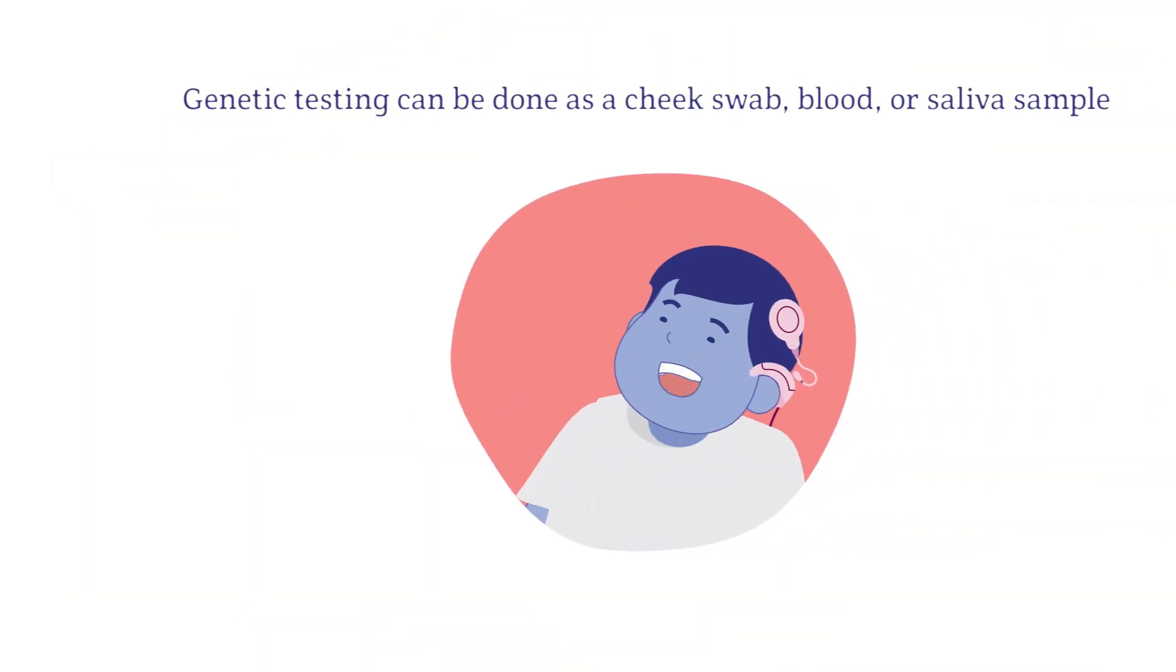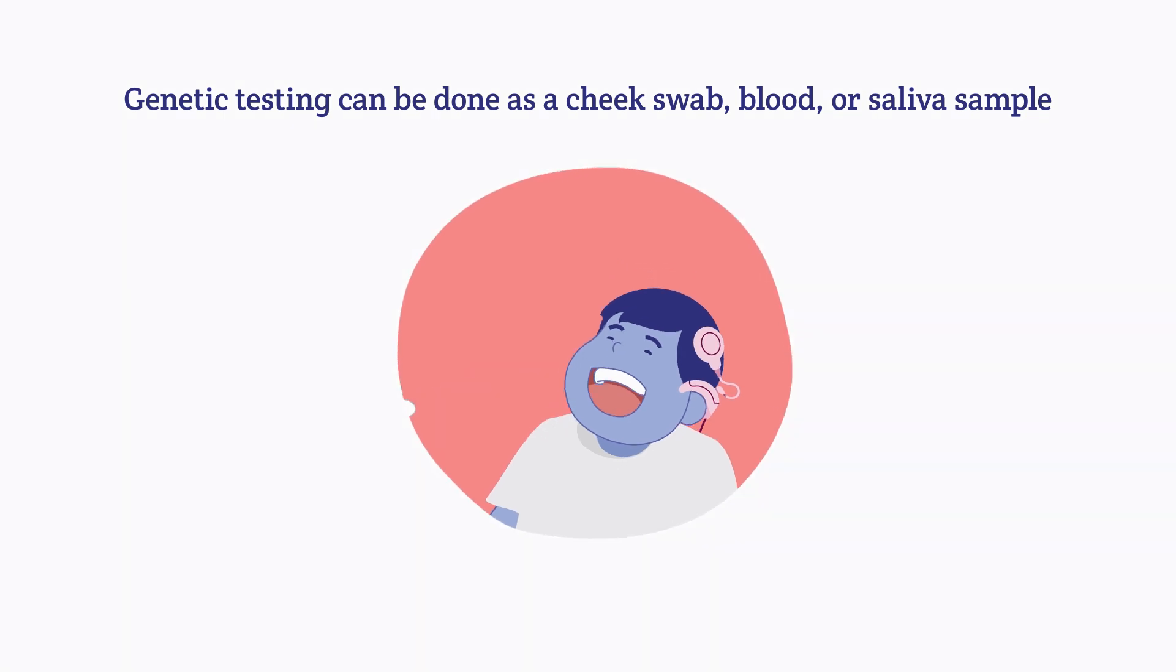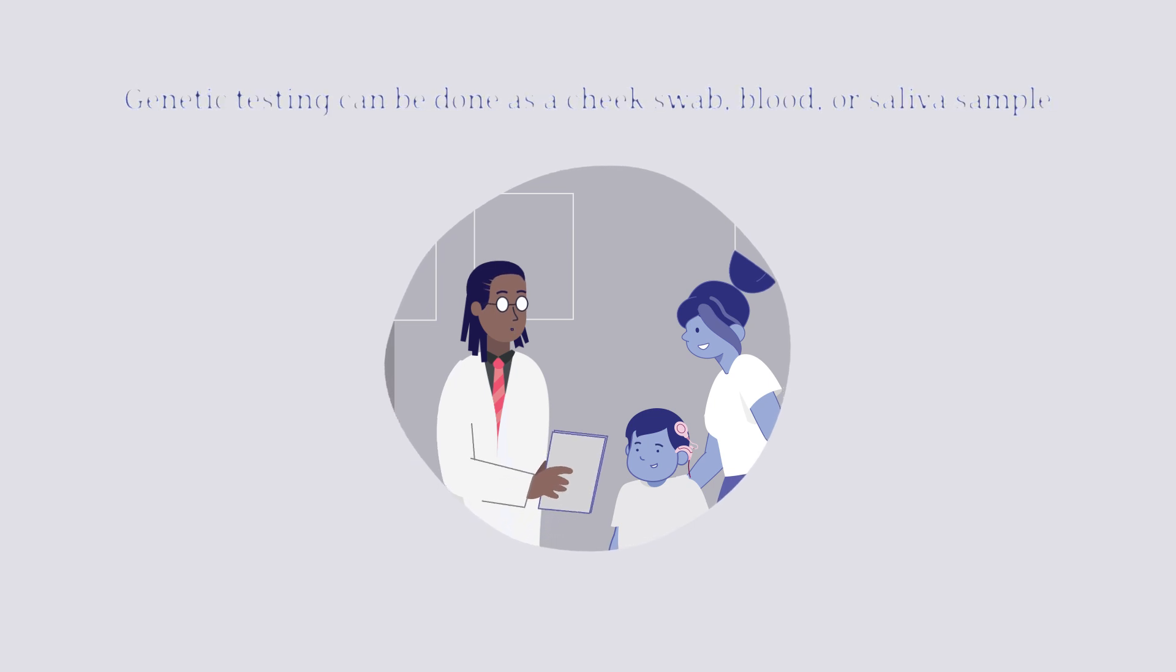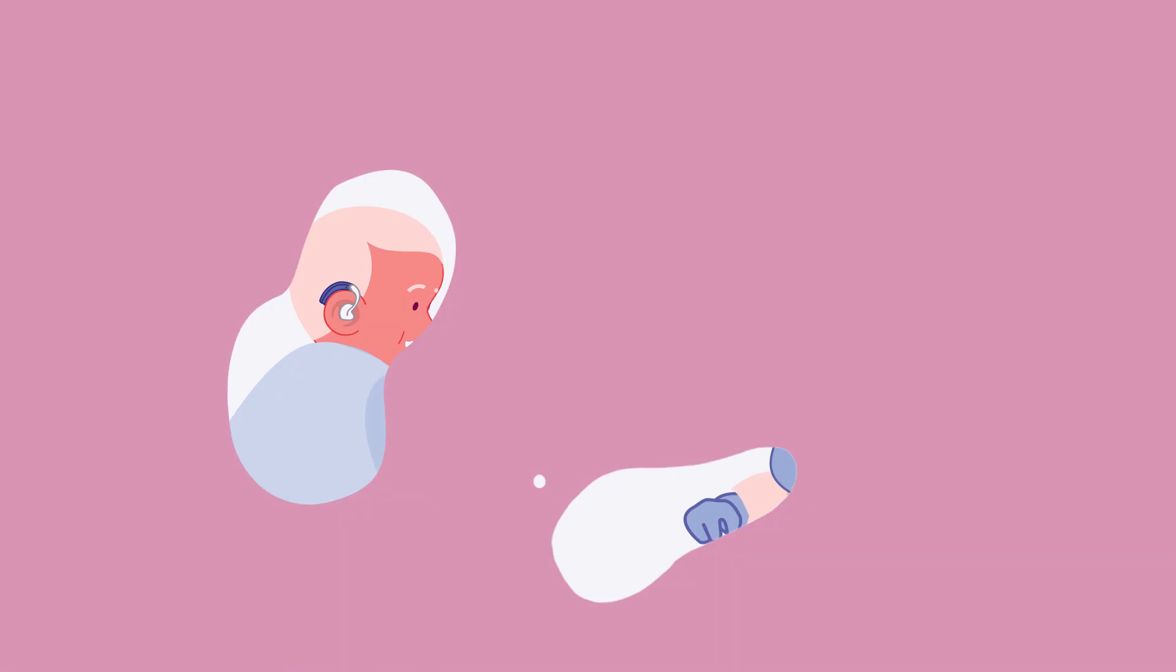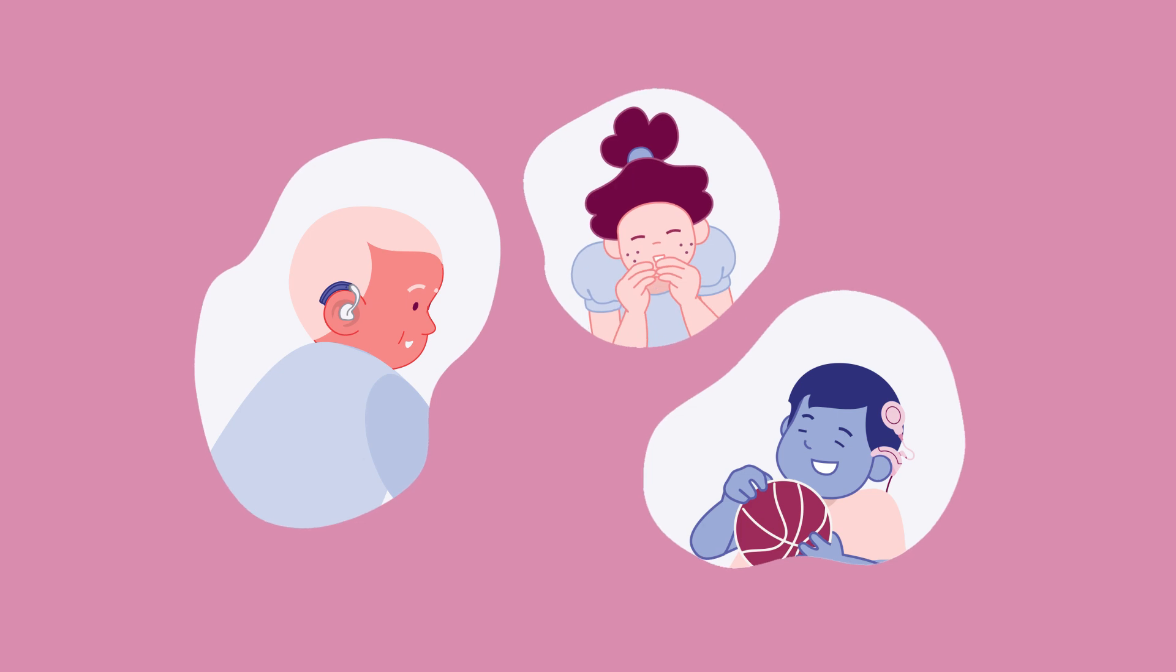The only way to confirm the cause of hearing loss is through genetic testing. Genetic testing, along with current standard tests, may allow for more personalized care and help inform the choice of hearing aid, cochlear implant, use of sign language, and other forms of visual communication, or a gene therapy.